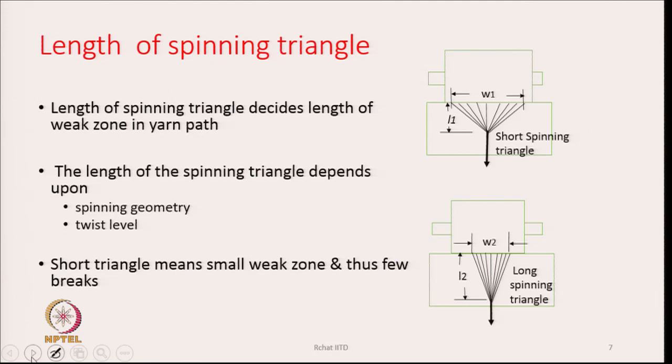A short triangle means a small weak zone and therefore less breakage. We always have to think about how to reduce the size of the spinning triangle. Though twist level can change the size, twist is decided by the demand imposed by the quality of the yarn or the kind of product to be made. Therefore, twist cannot be used as a means to change the size of the spinning triangle.